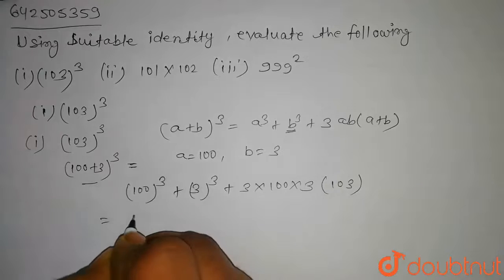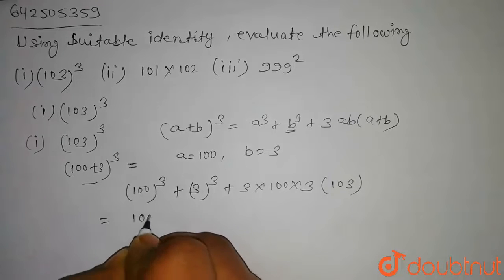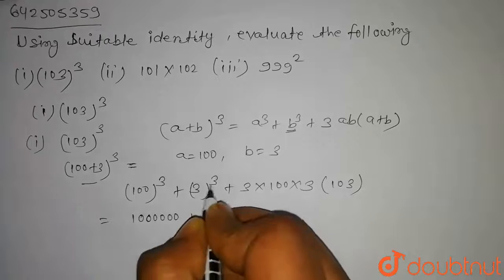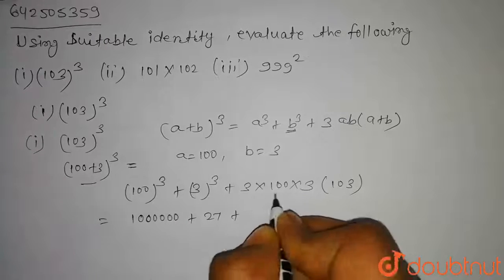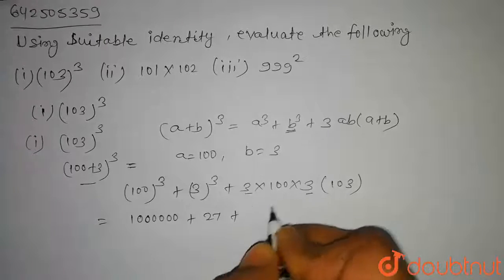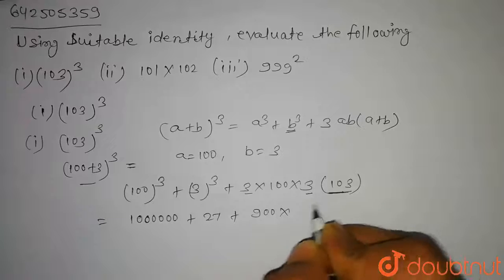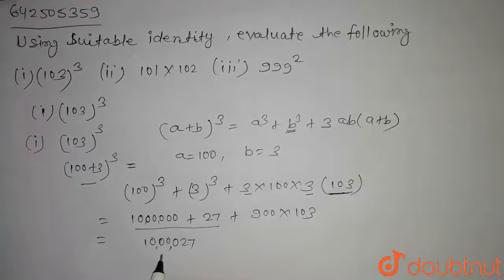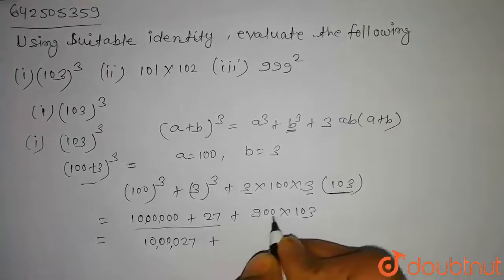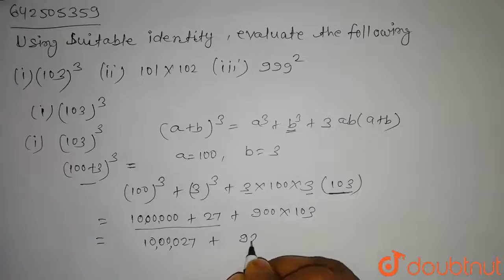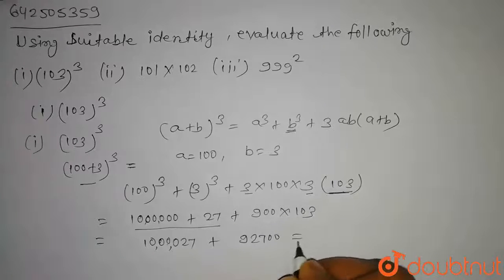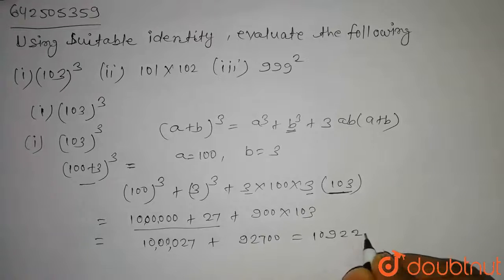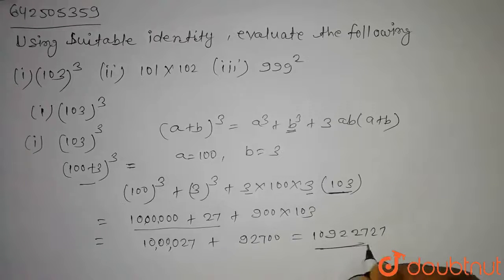So 100³ = 1,000,000, plus 3³ = 27, plus 3 × 3 = 9, and 9 × 100 = 900, and 900 × 103. On further solving this we get 1,092,727. So this is our answer.